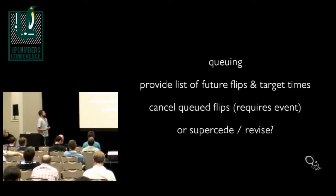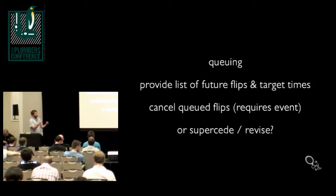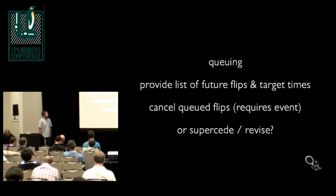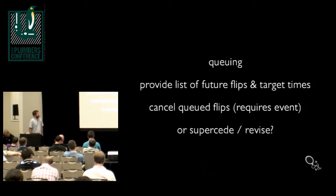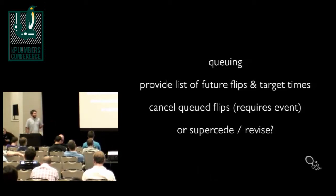The front-loaded approach is queuing: you provide a list of future frames with their target times. One hairy bit you need is the ability to cancel future flips — say you've switched channels or resized — then get feedback via an event letting you know what actually got displayed and what got discarded so you can get those frames back. Alternatively, instead of canceling, you could submit a new list of frames which supersede or revise the existing queue.